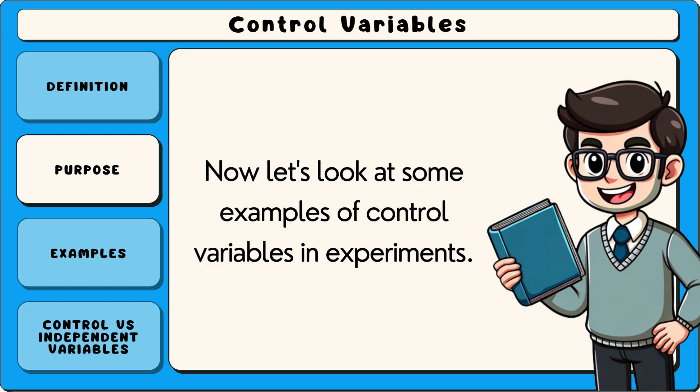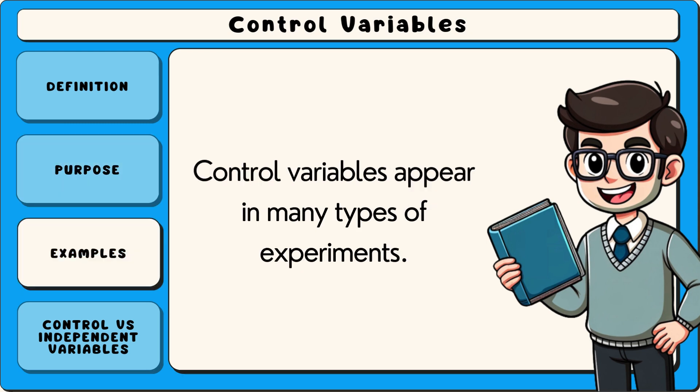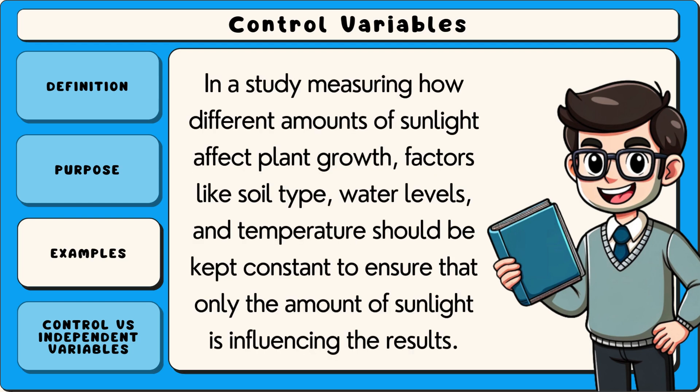Control variables appear in many types of experiments. In a study measuring how different amounts of sunlight affect plant growth, factors like soil type, water levels, and temperature should be kept constant to ensure that only the amount of sunlight is influencing the results.